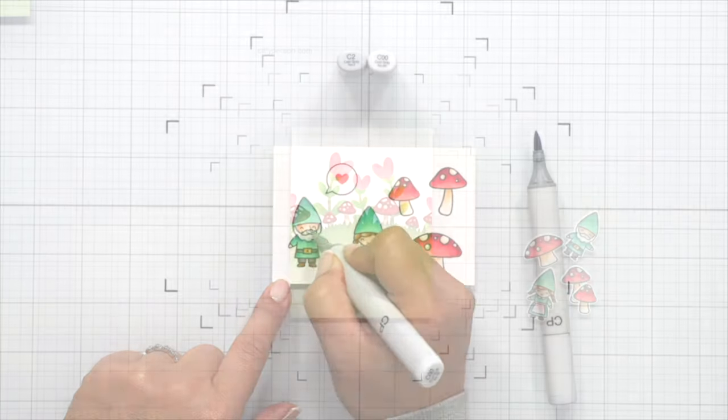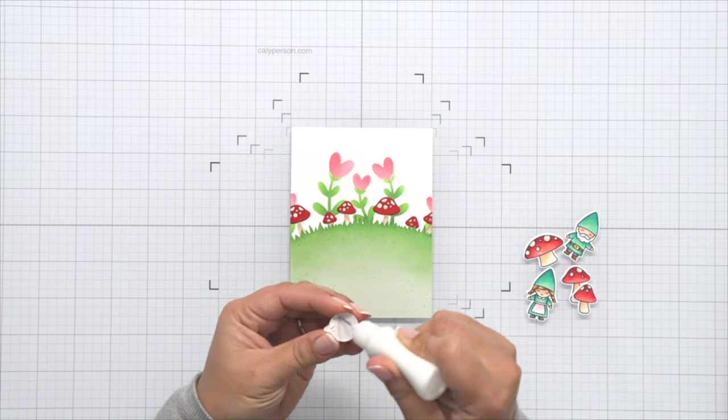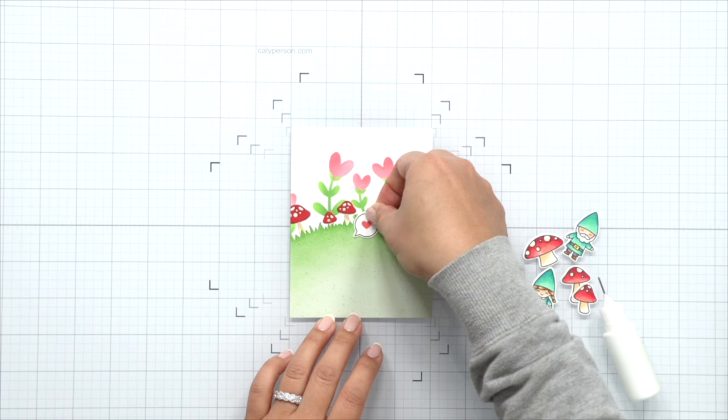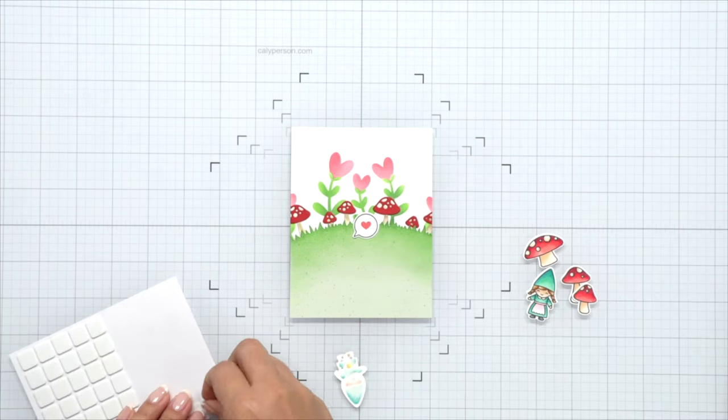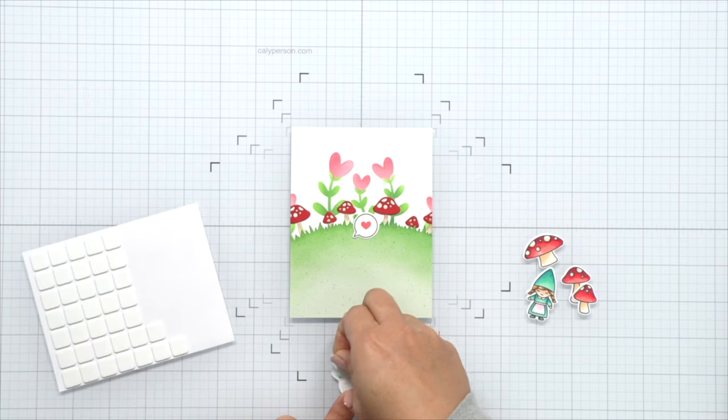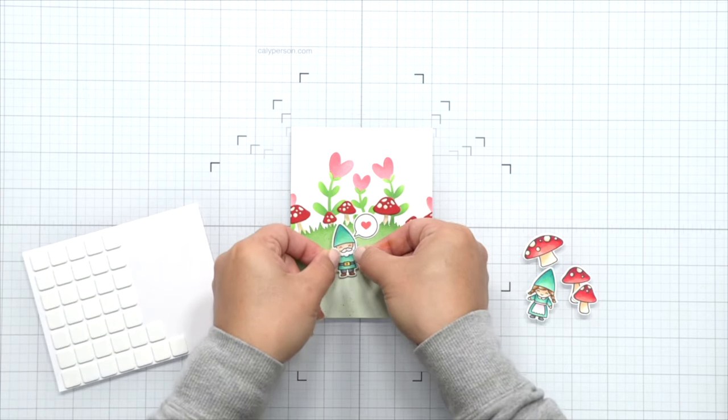Okay, so when I'm done coloring, I go ahead and die cut all the images off camera and now I'm going to attach them to create my scene. I'm going to add the speech bubble first at the center and then I'll add my gnomes using some low profile 3D foam squares just over that speech bubble.